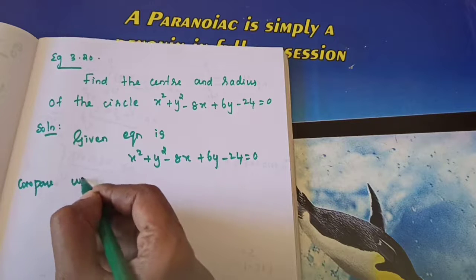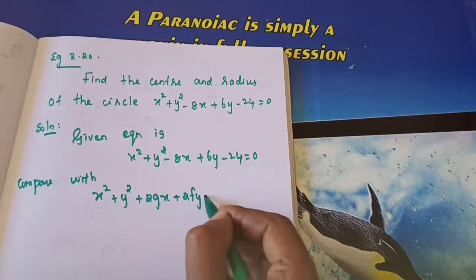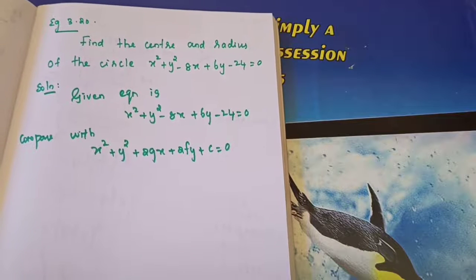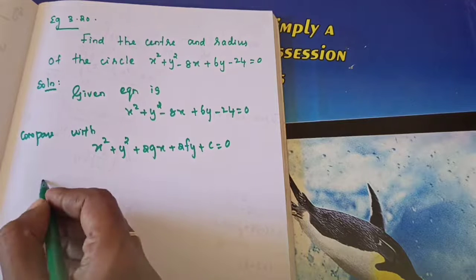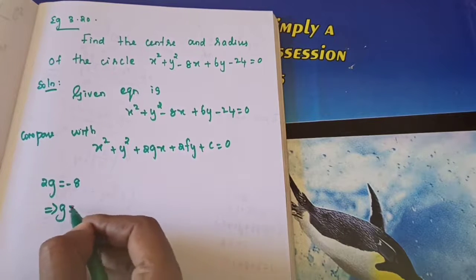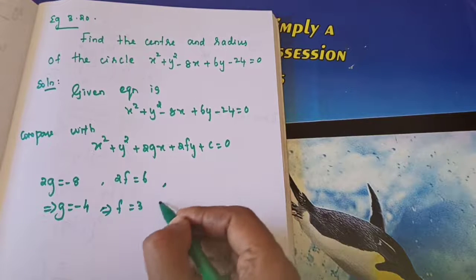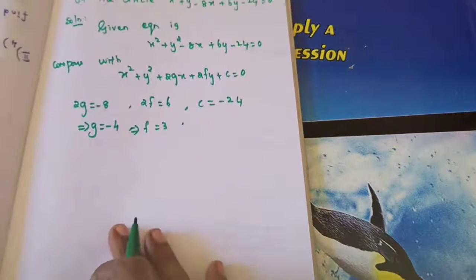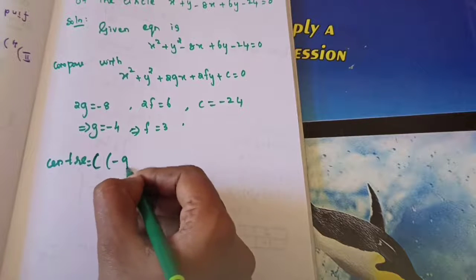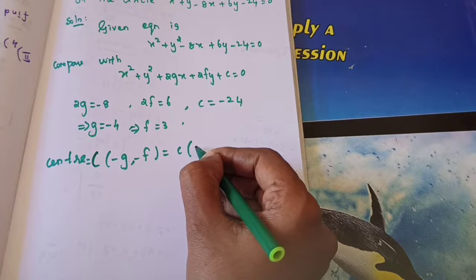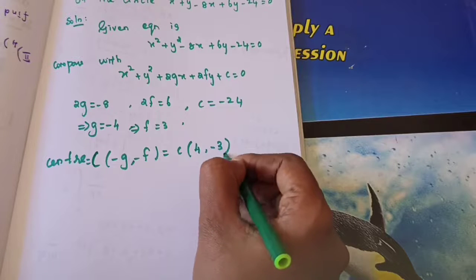Compare with x square plus y square plus 2gx plus 2fy plus c equals 0. So 2g equals minus 8, giving g equals minus 4. Then 2f equals 6, giving f equals 3. And c equals minus 24. The center is minus g comma minus f, which is minus of minus 4 comma minus 3, so center is (4, minus 3).